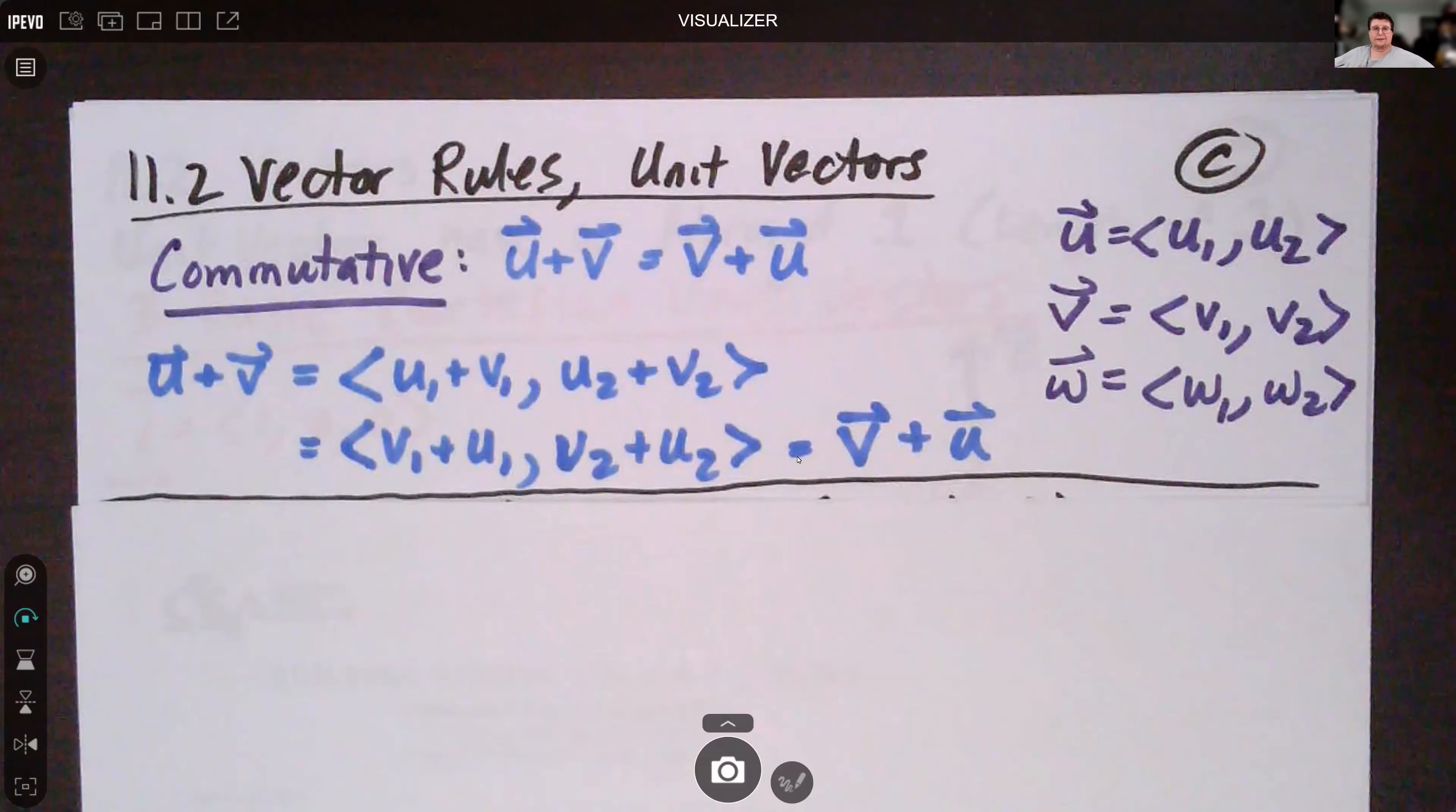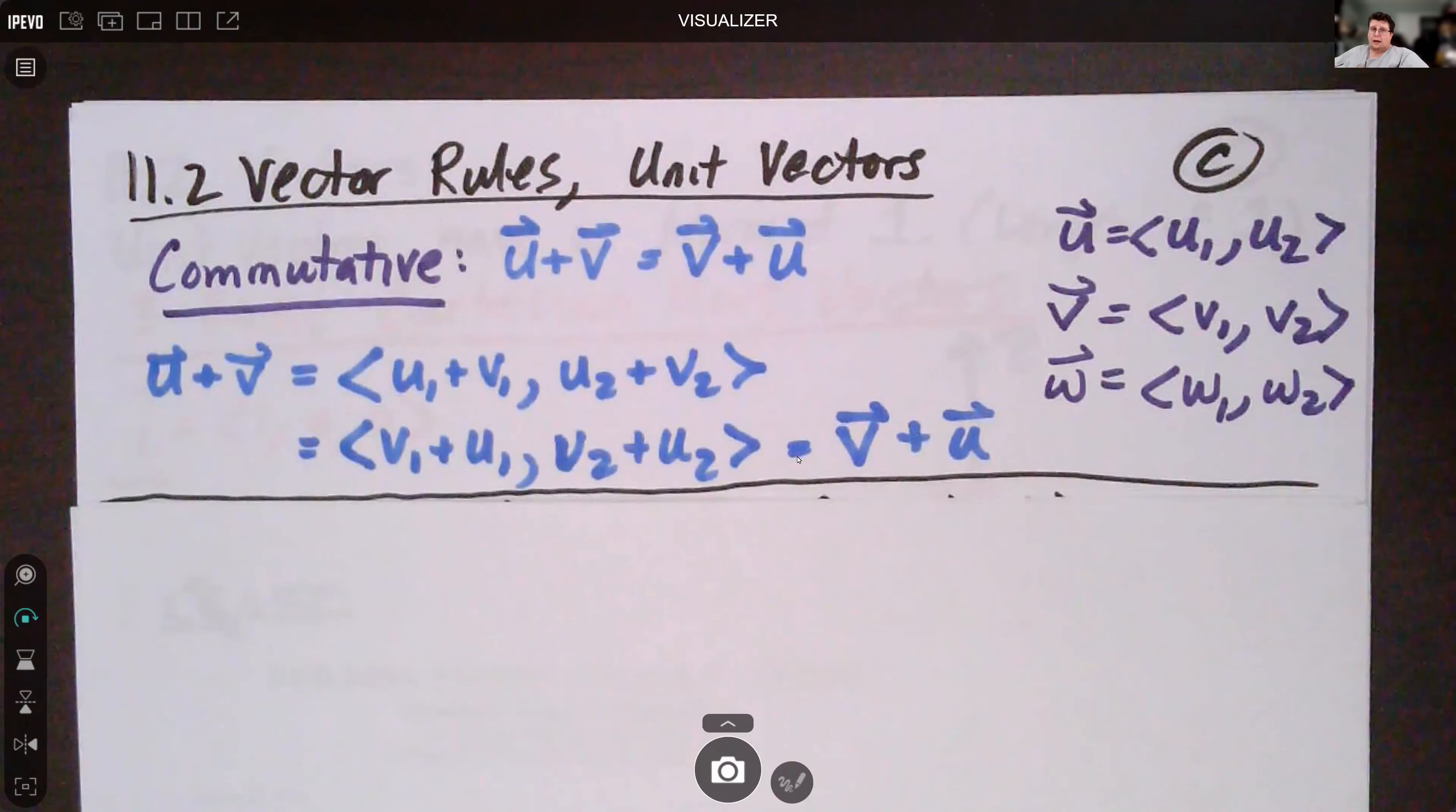We continue our lesson in 11.2 Vectors with some basic rules and discussion about unit vectors and magnitude. The first property we discussed earlier is the commutative property. We can add vectors in any order and they will result in the same vector. u plus v and v plus u end up with the same thing.